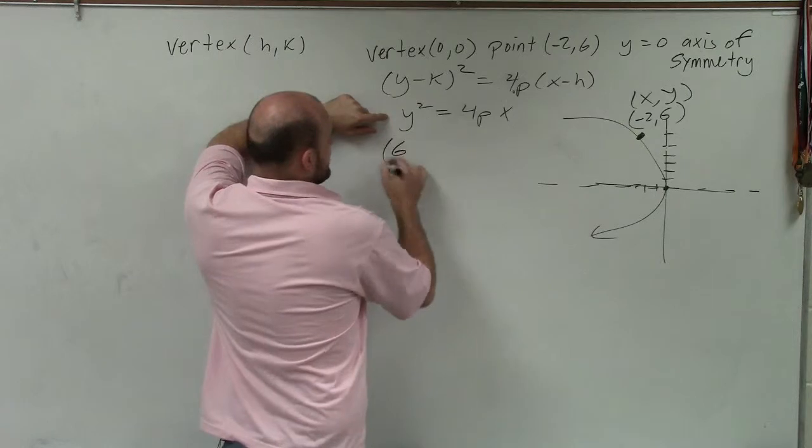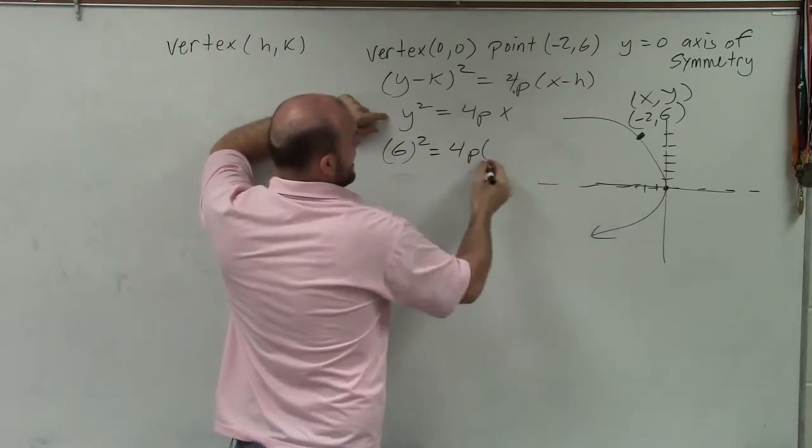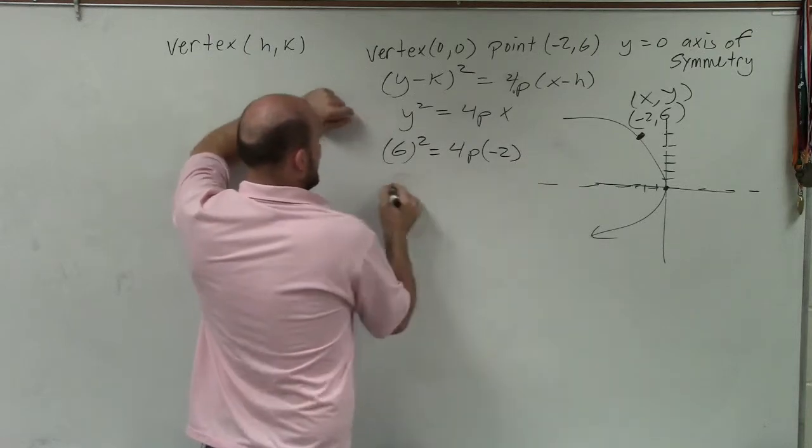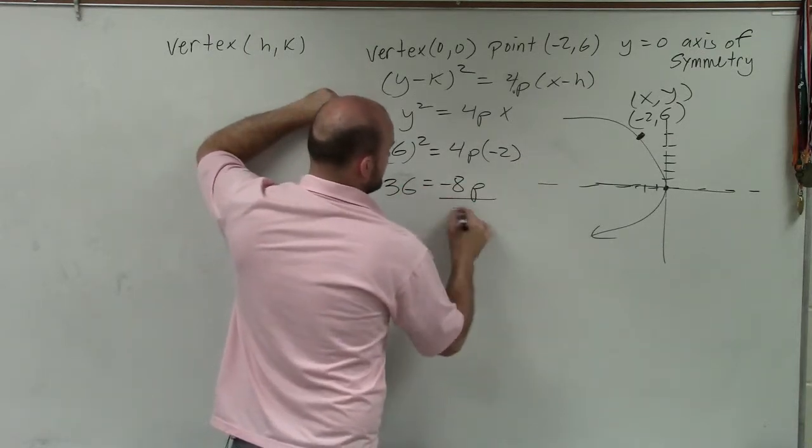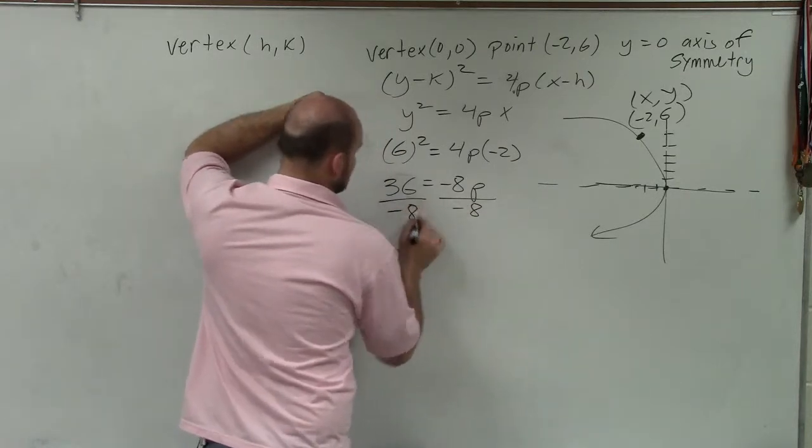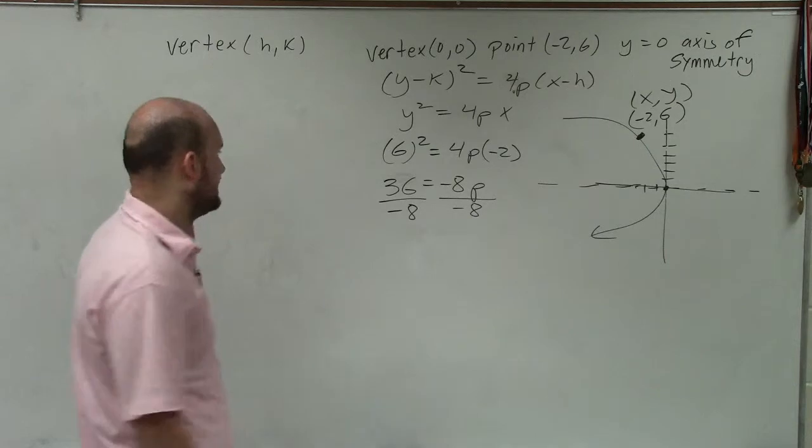So therefore, I'll plug in 6 in for y. And then 4p times x, which is negative 2. Therefore, I get 36 equals negative 8p divided by negative 8.